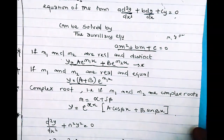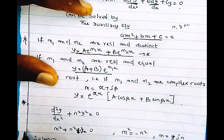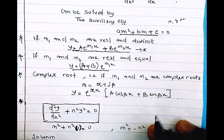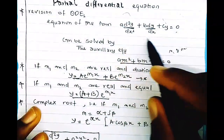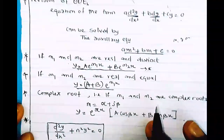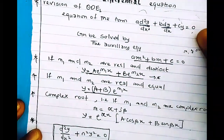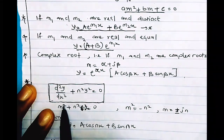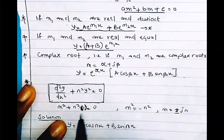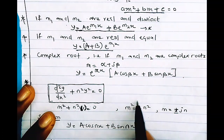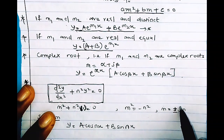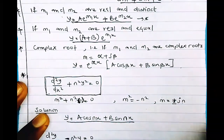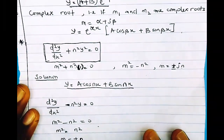There are special conditions for ODE solutions. For example, consider d²y/dx² + n²y = 0. This differs from the general form because the dy/dx term is absent. The auxiliary equation becomes m² + n² = 0, giving m = ±ni. The solution to this ODE is y = A cos(nx) + B sin(nx).